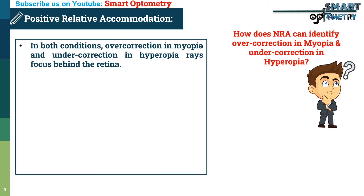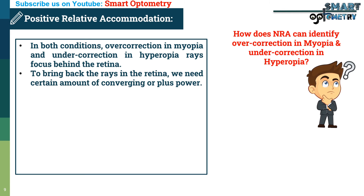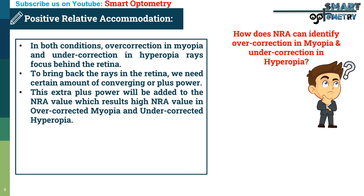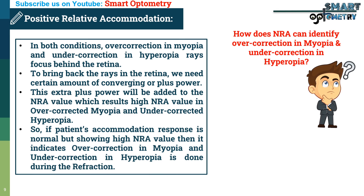In both conditions — over-correction in myopia and under-correction in hyperopia — rays are focused behind the retina. To bring the rays back onto the retina, a certain amount of converging or plus power is needed. This extra plus power is added to the NRA value, resulting in a high negative relative accommodation value in over-corrected myopia and under-corrected hyperopia. So if a patient's accommodation response is normal but showing high NRA value, it indicates over-correction in myopia or under-correction in hyperopia during refraction.